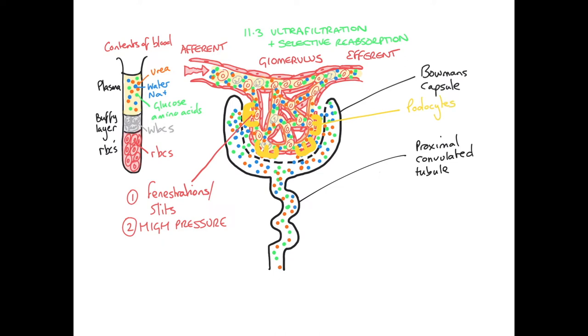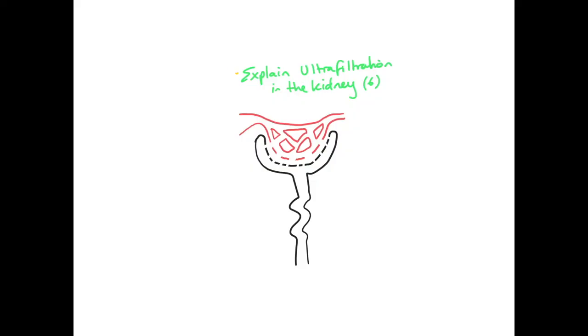Because the glomerulus is under high pressure, it needs a support system. These little feet called podocytes support the holes or the fenestrations, and stop the glomerulus from falling apart under high pressure. Let's pause and do a summary.